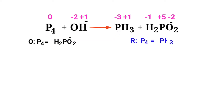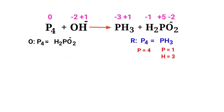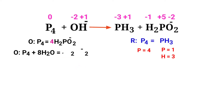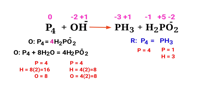Now balance the number of atoms in the two half reactions. In the oxidation half reaction, to balance the phosphorus atoms, put a coefficient of four in front of H₂PO₂⁻. The phosphorus atoms are now balanced. Then balance the oxygen atoms by producing water molecules — the oxygen atoms are now balanced.